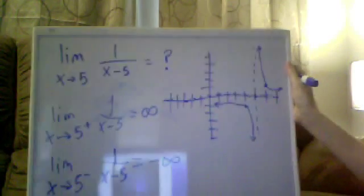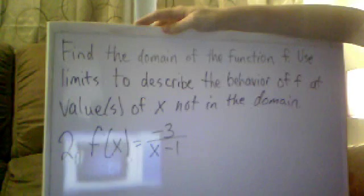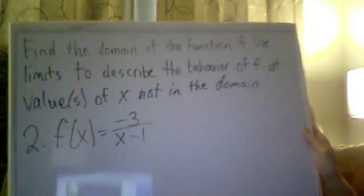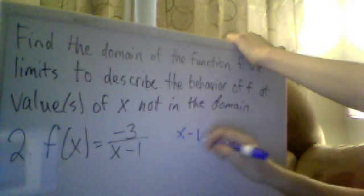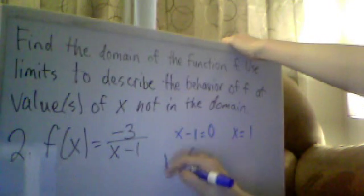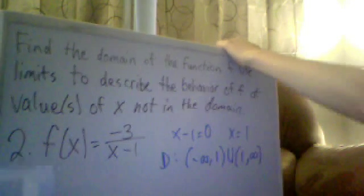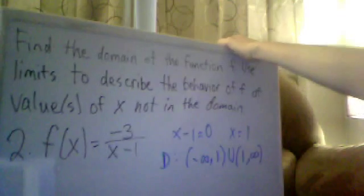The instructions on number one and number four say: find the domain of the function F, use limits to describe the behavior of F at values of X not in the domain. The first thing you have to do, looking at number two as an example, is figure out what the problem with the domain is. X minus one equals zero is where our problem is going to be, so X equals one. My domain is from negative infinity to one and from one to positive infinity. The value not in our domain is one.